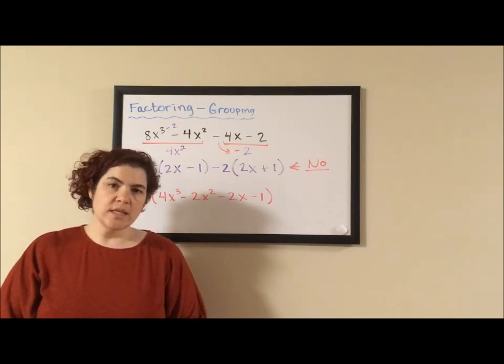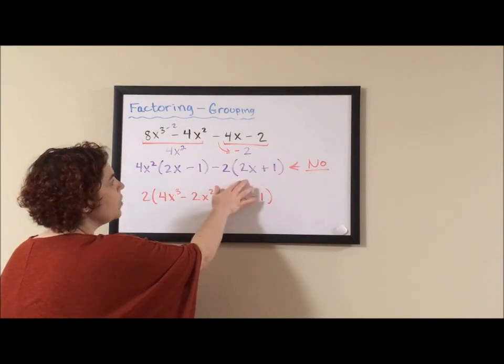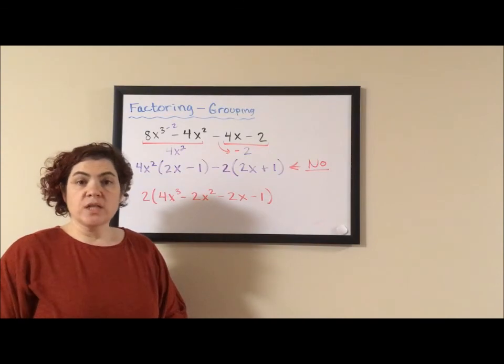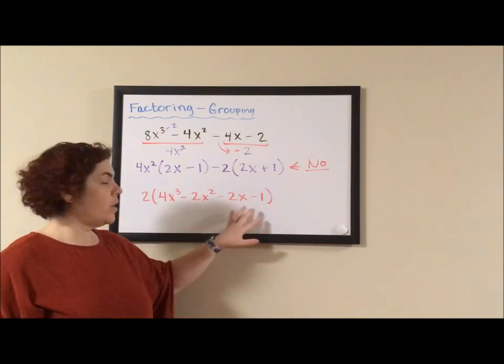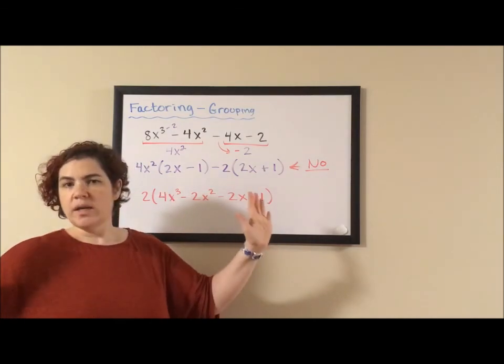The next mistake I see students make on a problem like this, besides trying to use this purple answer as the correct answer, is saying prime at this point. Because the four-term polynomial is prime, I get a lot of students saying prime, done, and done.